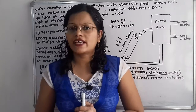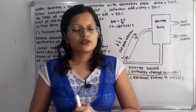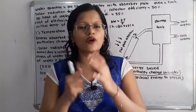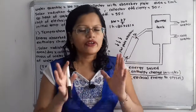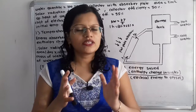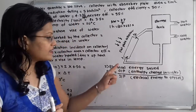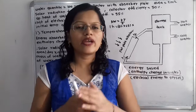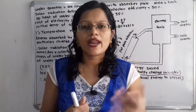Now we will move to the second question: what is the electrical energy saved? For the required output, that is the enthalpy change of the water — the geyser efficiency is given. Efficiency equals output by input. The output is the enthalpy change in water, and the input is the electrical energy supplied to the geyser, which we have to find in kilowatt hour.